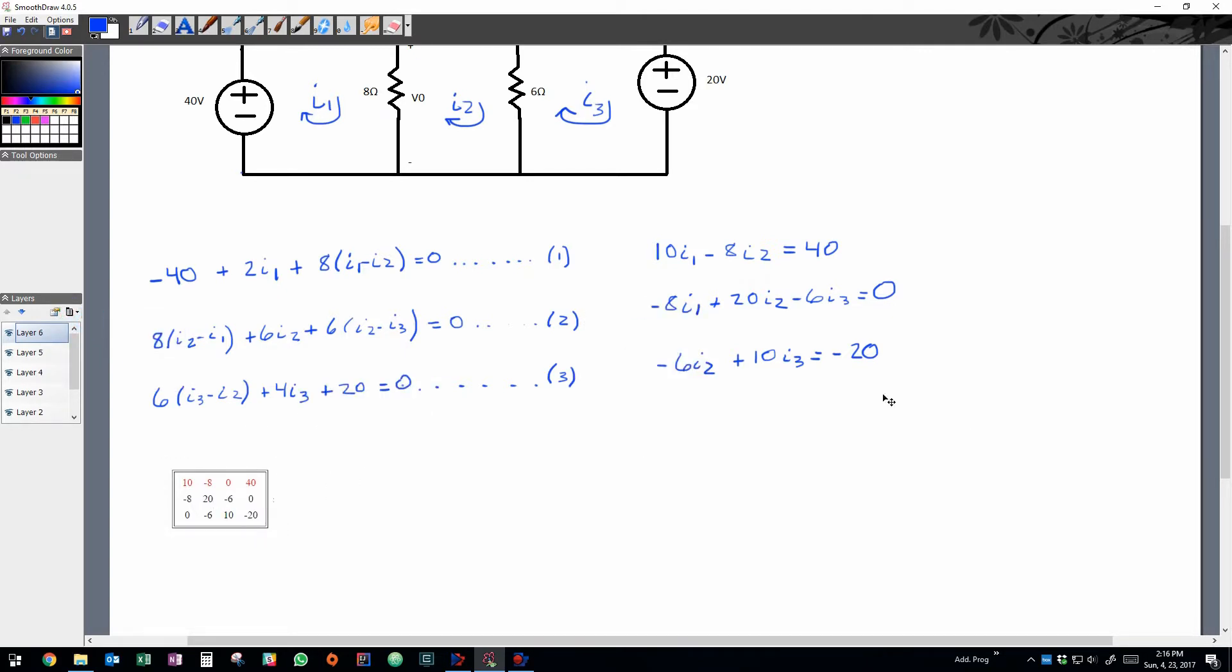And then the fourth column is actually going to be what's to the right of the equal sign. So in this case, row or column one will be the coefficient of i1, column two will be the coefficient of i2, and then same thing for i3.